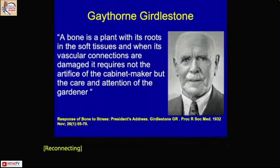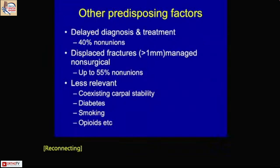I like this slide because Girdleston once said that bone is something like a plant with roots, and soft tissue is where its vascular connections are. When those are damaged, it requires not the work of a cabinet maker but a gardener — you need to garden the scaphoid with its vascular connections to heal and achieve union. We all know that the intraosseous blood supply is precarious in scaphoid non-union, which is one reason for AVN.